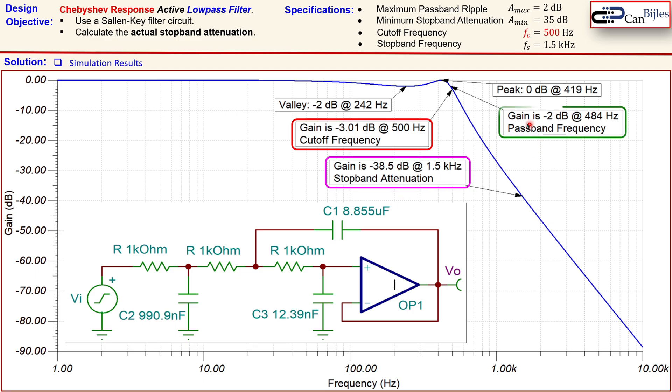In addition, you see that here the passband frequency, which is the 484 Hz, that is the gain where you have minus 2 dB. So this ripple, which you actually see as a ripple.